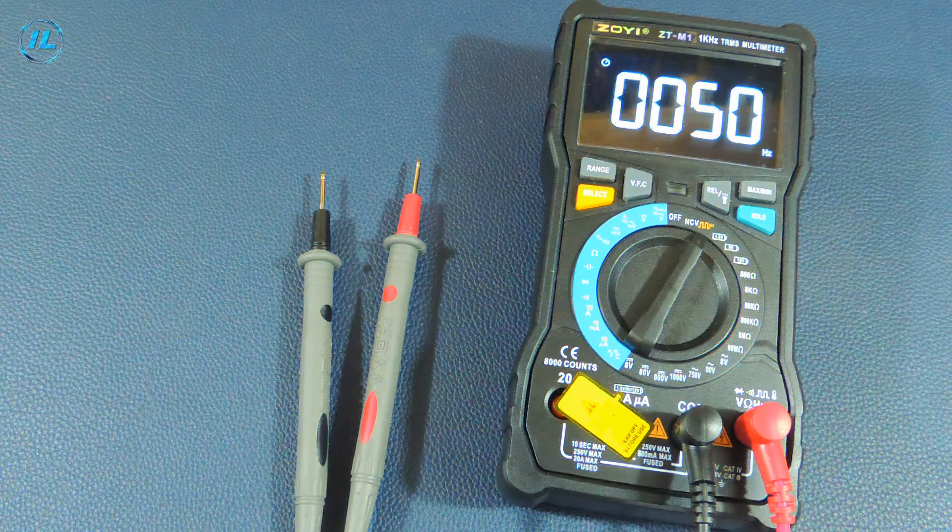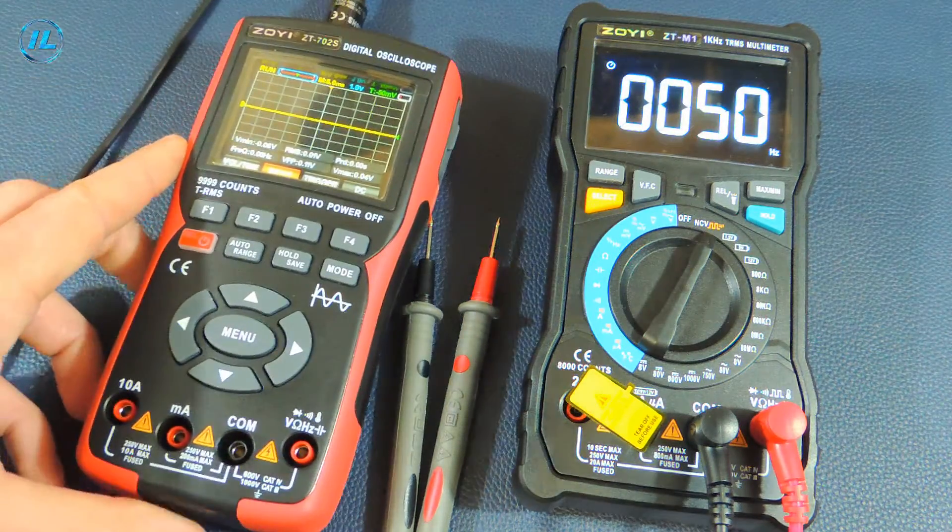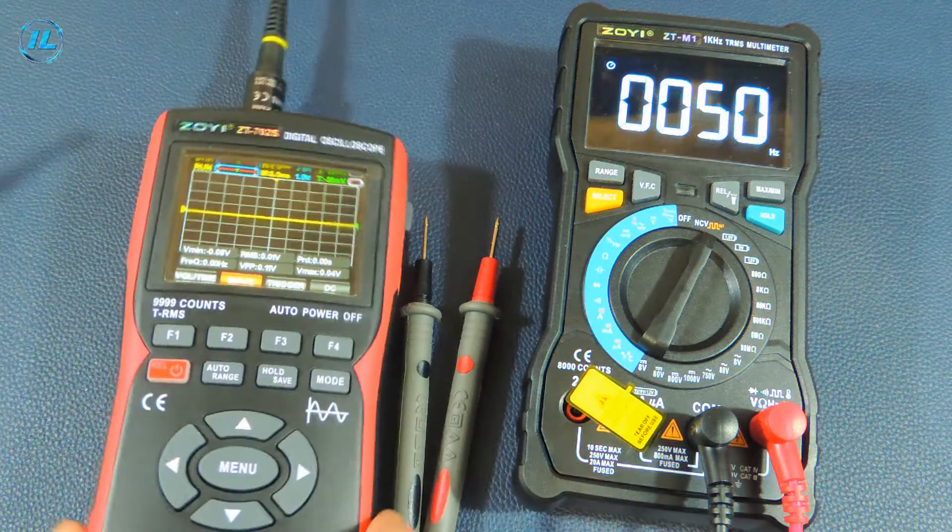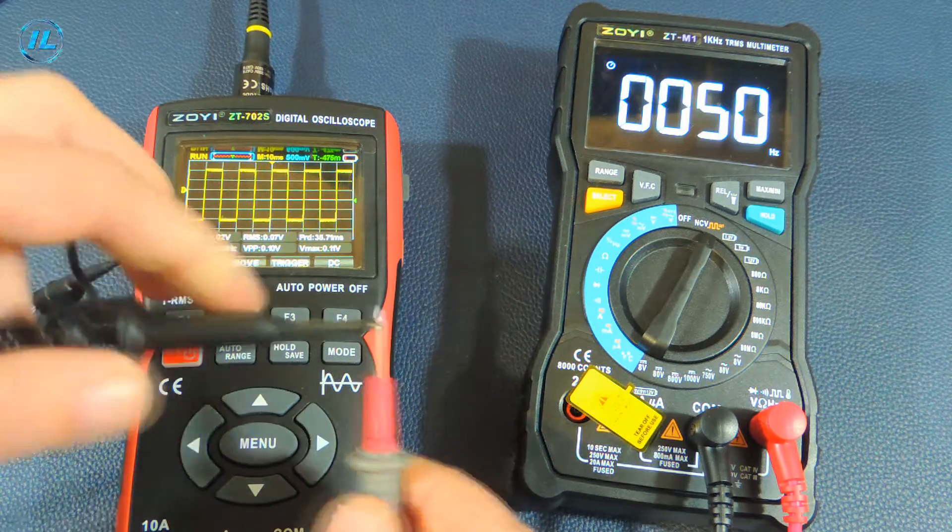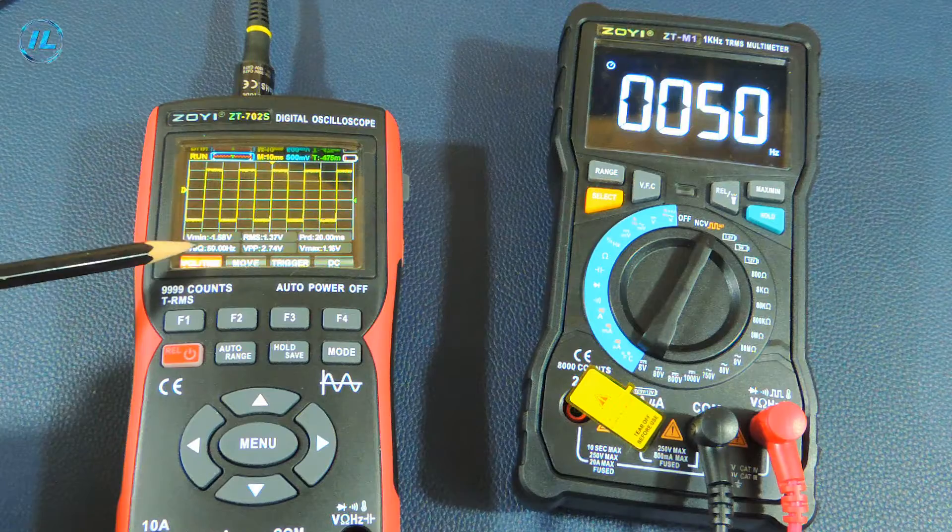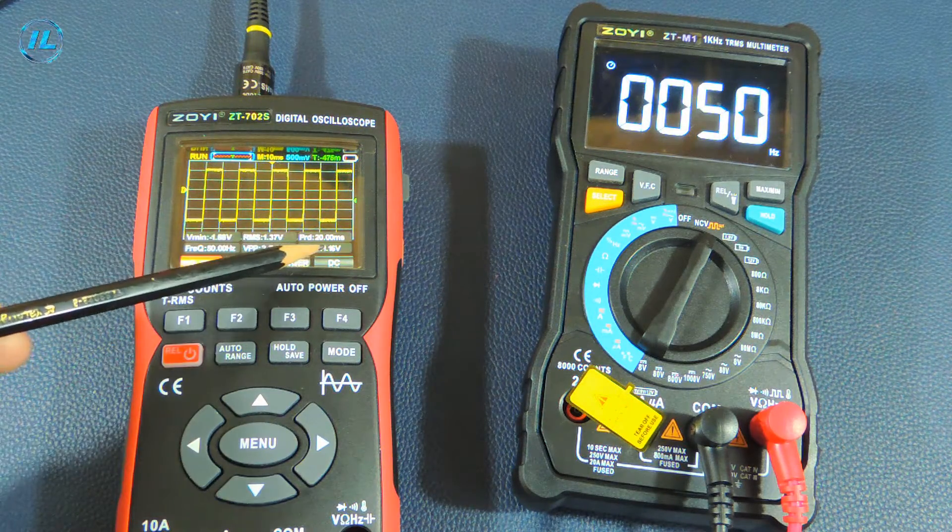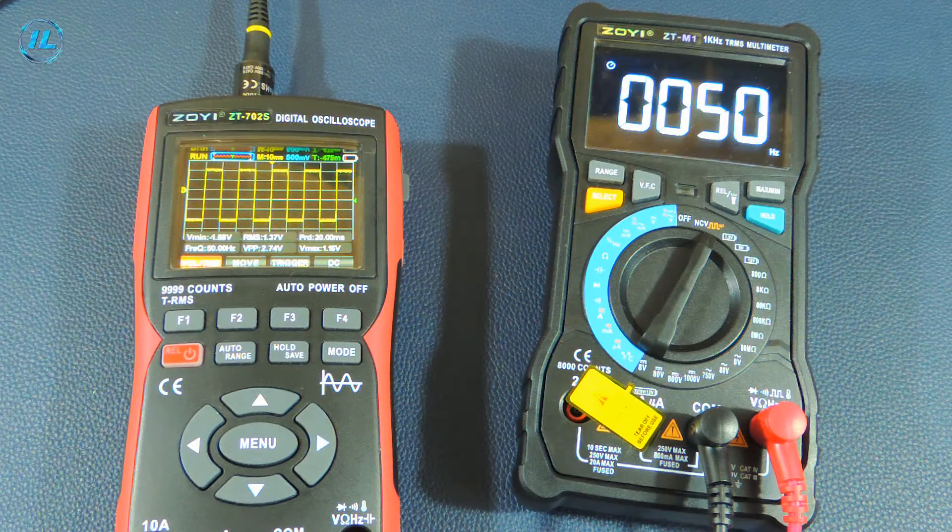The next item is the generator. The minimum frequency is 50 hertz. To test the oscillator, I will connect an oscilloscope. The output of the generator is 50 hertz. The oscilloscope shows exactly the same frequency: 50 hertz and a maximum voltage of 1.16 volts.